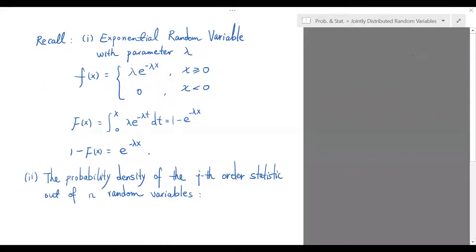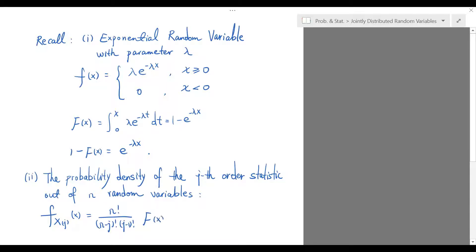The probability density of the j-th order statistic out of n random variables is n factorial over (n minus j) factorial times (j minus 1) factorial, times F(x) to the (j minus 1) power, times (1 minus F(x)) to the (n minus j) power, times lowercase f(x).